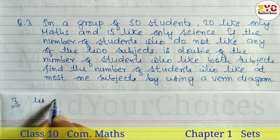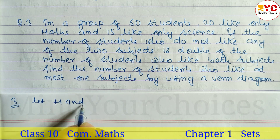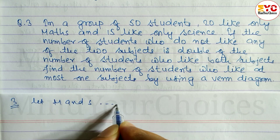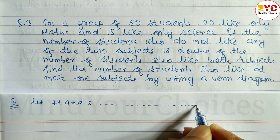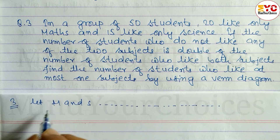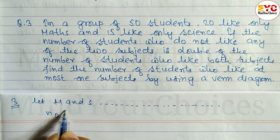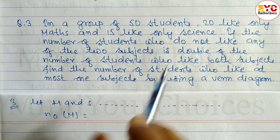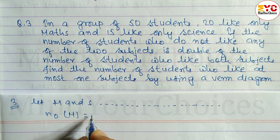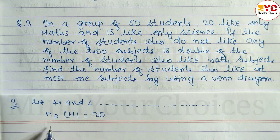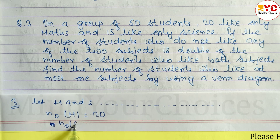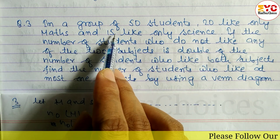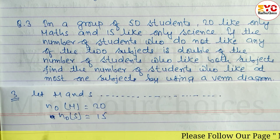Let M and S represent the set of students who like mathematics and science respectively. Only M is equal to 20 — students who like only math. Only S is equal to 15 — students who like only science.